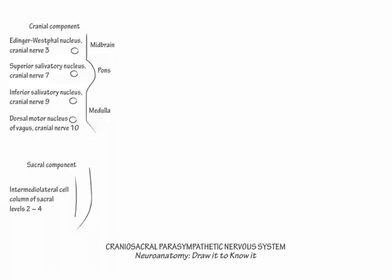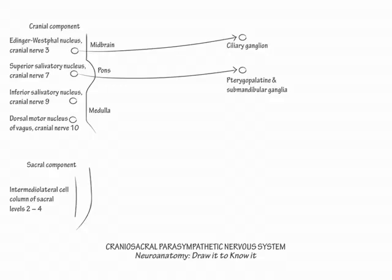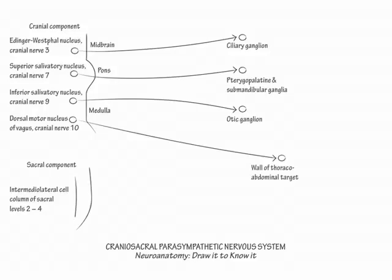Next, let's indicate the parasympathetic ganglia sites, which process and relay information from the pre- to the postganglionic tissues. Cranial nerve 3 relays in the ciliary ganglion, cranial nerve 7 relays in both the pterygopalatine and submandibular ganglia, cranial nerve 9 relays in the otic ganglion, and cranial nerve 10 relays in the walls of its target organs in the thoracoabdominal cavity. The visceral motor cell axons from sacral levels 2 through 4 pass through the sacral plexus and then travel as the pelvic splanchnic nerves before they relay in the ganglia of their target organs in the abdomen and pelvis.